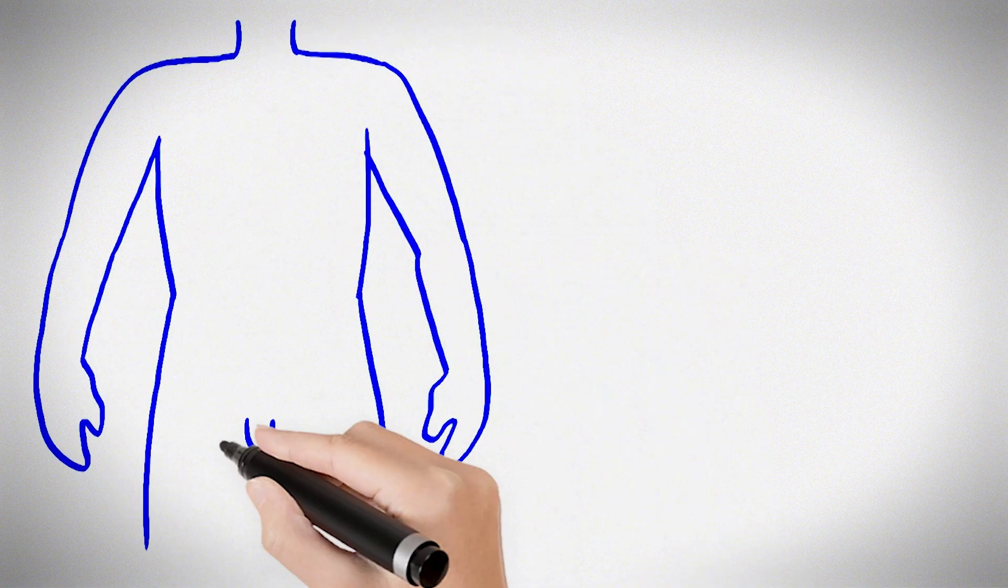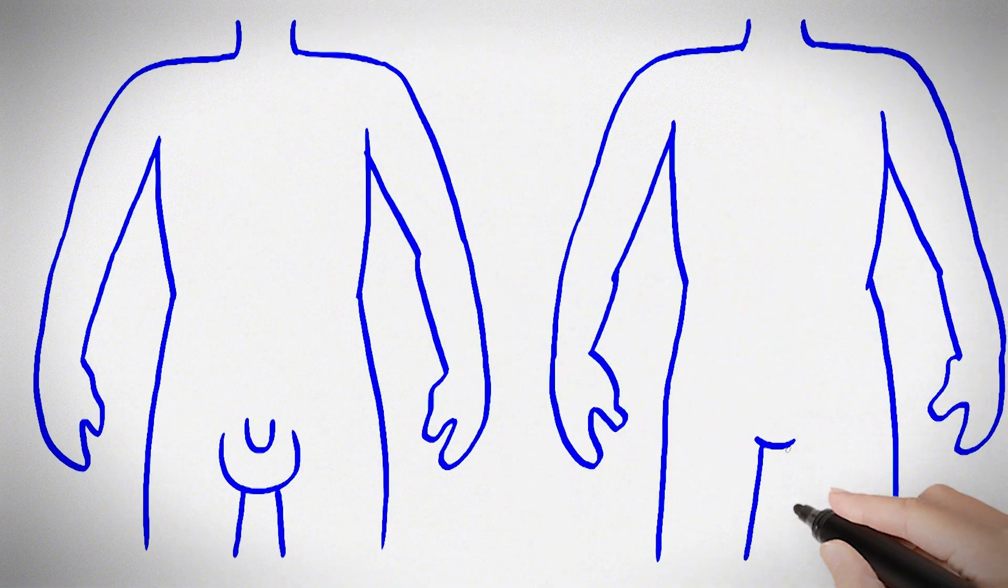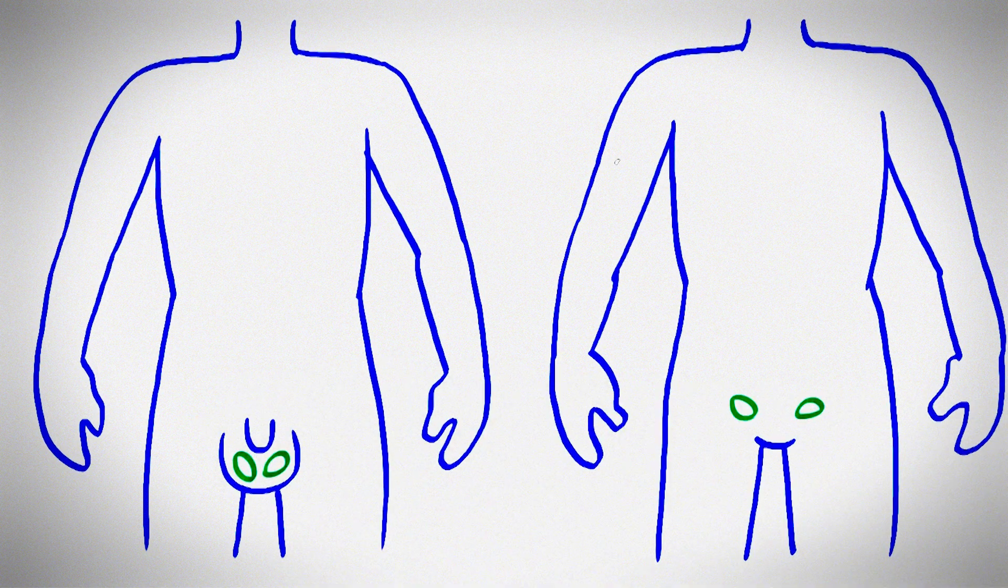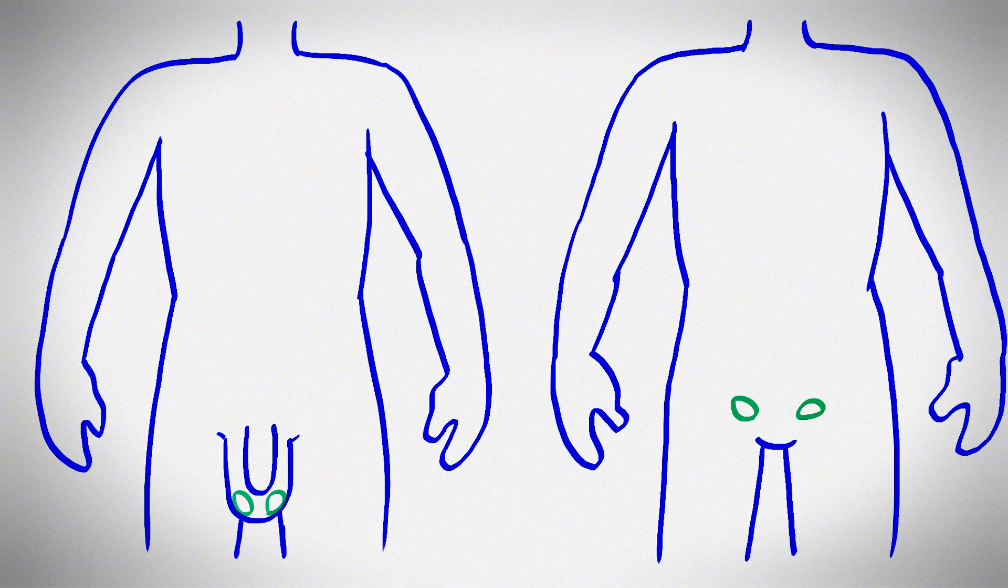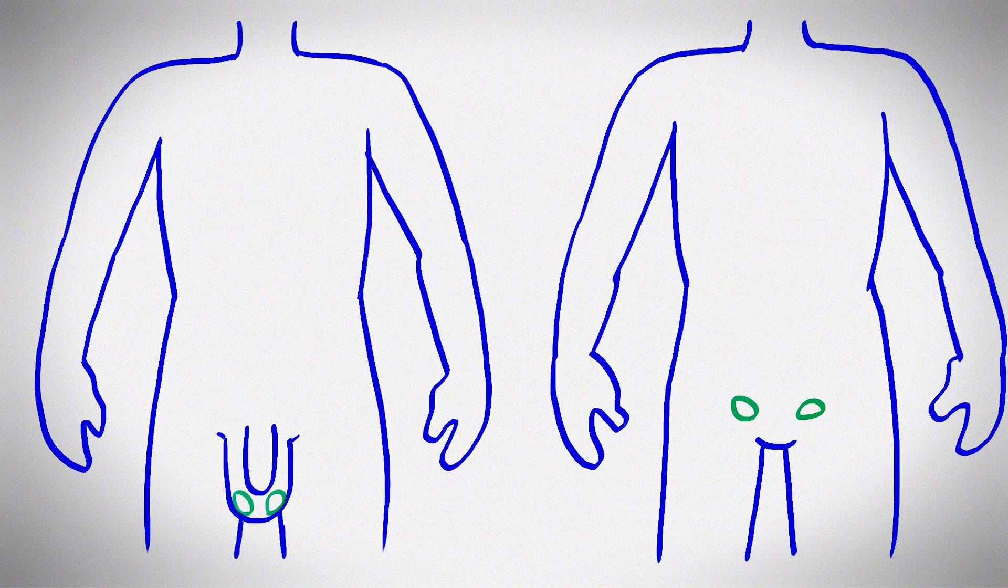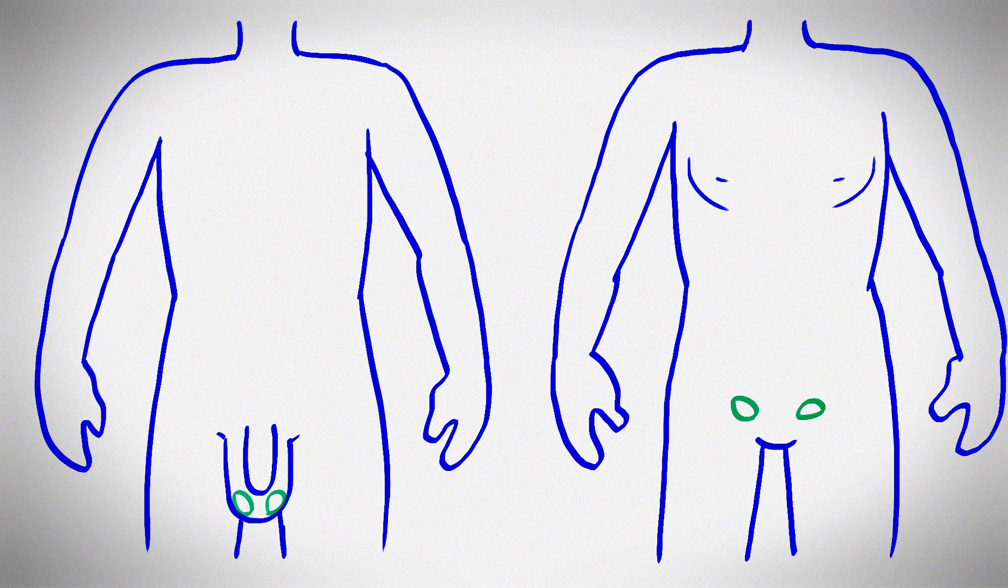When can I start taking puberty blockers? You begin puberty blockers after your body shows signs of puberty. Usually this is after bodies with testicles have started to have increased testicle size and growth of the penis, and bodies with ovaries have started to have breast changes. It is not necessary to start puberty blockers before puberty.